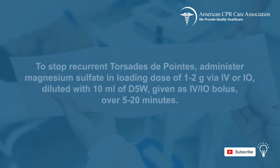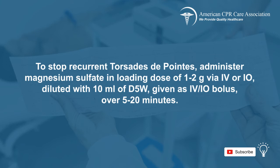For the abnormal heart rhythm known as recurrent torsades de pointes, administer magnesium sulfate in a loading dose of 1 to 2 grams via IO or IV access, diluted in 10 milliliters of dextrose 5% in water or D5W, given as an IV or IO bolus over 5 to 20 minutes.